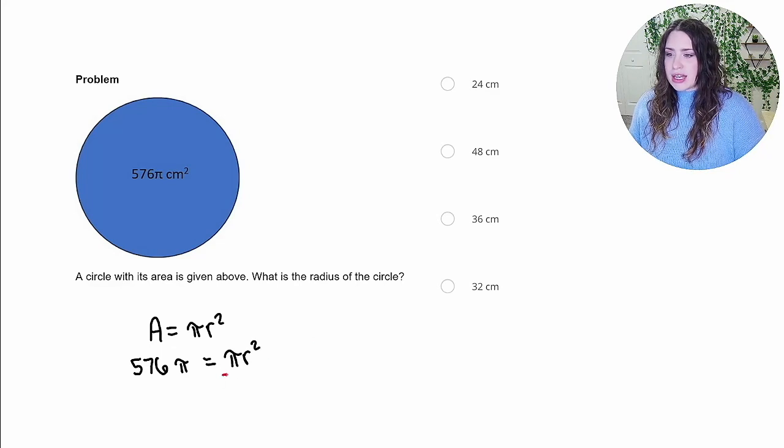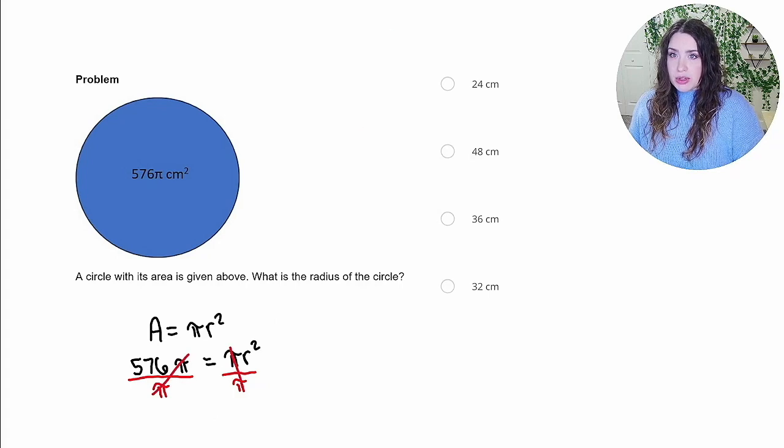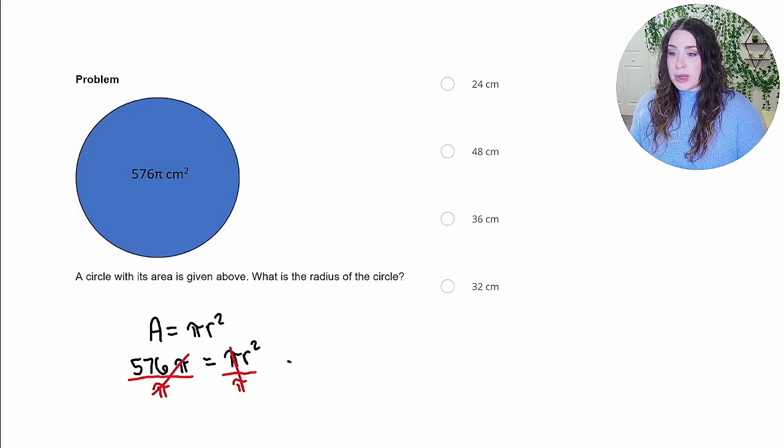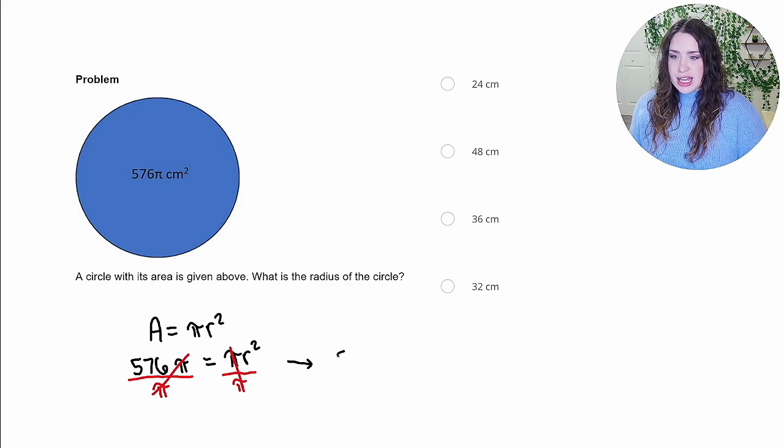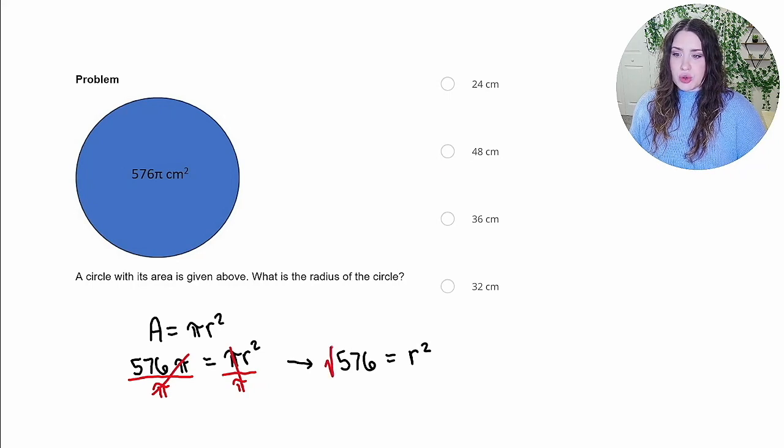Now, to begin, we can go ahead and divide both sides by pi. And that might feel weird, but remember pi is just a number, it's approximately 3.14. So those are going to eliminate on both sides of the equation. So all we need to do here is take that 576, which is equal to the radius squared. And in order to find just the radius, we need to square root both sides of this equation.